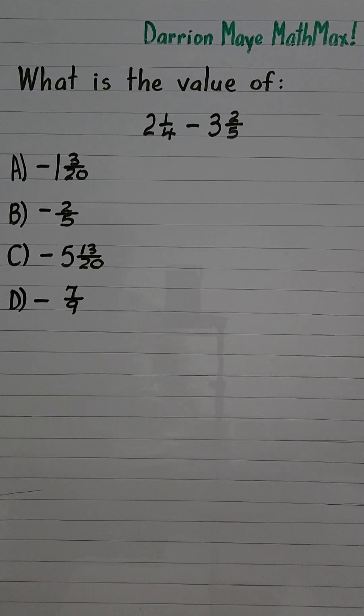4, 2 is 8 and 1, 9 over 4 and 5, 3 is 15 and 2, 17 over 5.